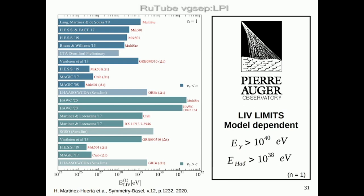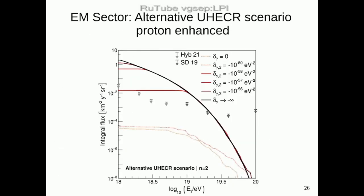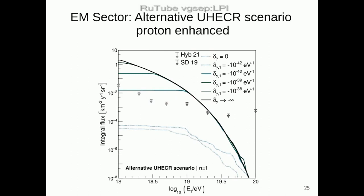Question from audience: Can you comment on the shape of your predictions — those wiggles in the models below the Auger upper limits? Is that physics or numerical instability? Answer: It's statistics in the simulation. The models that produce more photons don't have the wiggles because we have more photons; the ones that produce only a few photons start to show wiggles. We didn't care to make them smoother because they are so far away from the data that it wouldn't change anything.